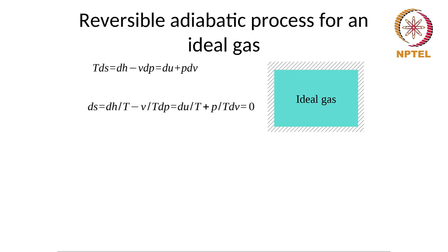Welcome back. We will look at a reversible adiabatic process for an ideal gas. Let us say we have an ideal gas in a container which is insulated and deformable, so it can undergo an adiabatic process where it increases or decreases in volume. The TDS relations for a gas are given by TDS = dH - VdP or TDS = du + PdV. These are the Gibbs relations, which we have used earlier to calculate the change in entropy when a gas, liquid, or solid undergoes a process.